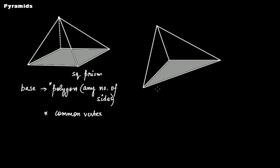In this case, the base is a triangle — a triangular base. From each side of this triangle, you have triangular faces that meet at a common vertex. Therefore, this is a triangular pyramid.